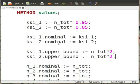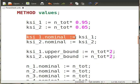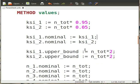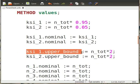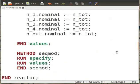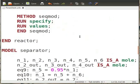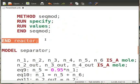For assigning the nominal value, we write ζ1.nominal equals ζ1. Similarly, for assigning the upper bound, we write ζ1.upper_bound equals n_tot times 2. Now end the method values. Define the method sec_mode and end the reactor.